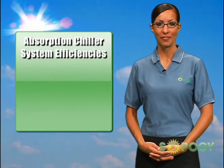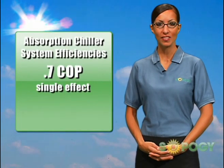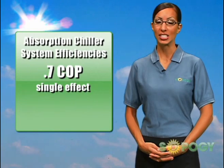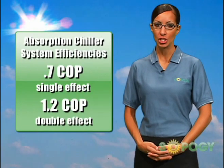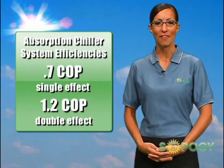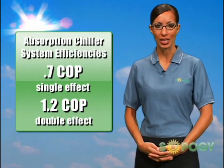Absorption chiller system efficiencies are often around 0.7 COP, or coefficient of performance, for a single effect, or 1.2 for a double effect absorption chiller, making for a good complement to the efficient SOPOG Micro CSP Solar Collector.